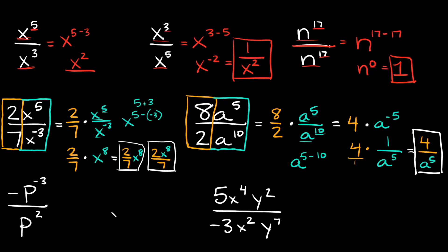Alrighty, now let's just do two more examples, and these, as you can see, have some negative signs in them. So here we have negative p to the negative third power over p squared. This negative sign can be confusing sometimes. One thing you can do is just write a 1 right there — whenever there's no coefficient, you can always assume there's a 1 right there. It's the same thing down here. So then you can see we have negative 1 over positive 1, and you can treat it the same way we did the previous two problems.